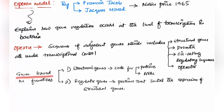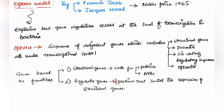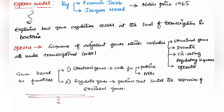Based on function, genes are divided into two types: structural genes and regulatory genes. Structural genes are DNA sequences that code for proteins, enzymes, or RNA. Regulatory genes also code for proteins, but these proteins are used to control the expression of the structural genes.